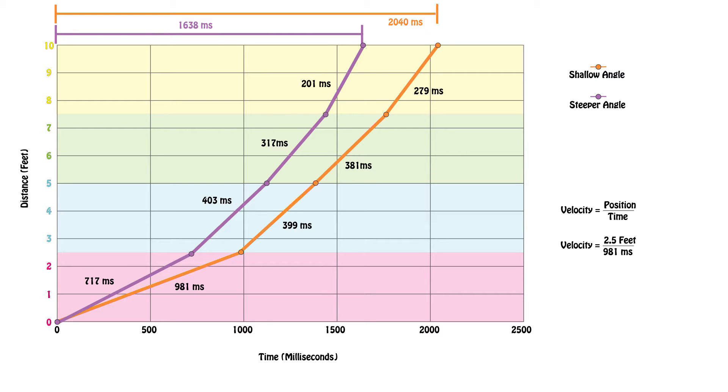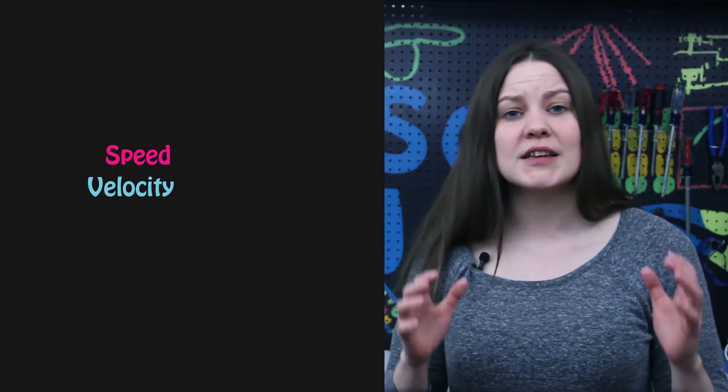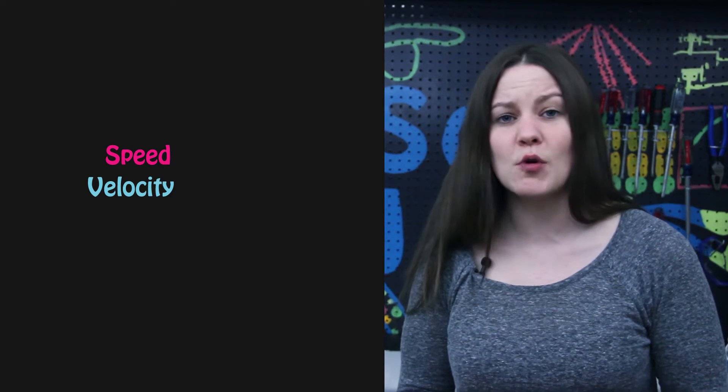This comparison of change in position over time is known as velocity. When you were thinking about how the ball's motion was changing down the ramp, you might have described it as speeding up. And speed is very closely related to velocity. Speed and velocity both tell you how quickly something is moving.